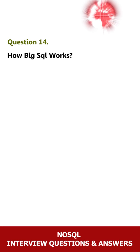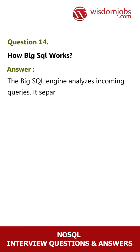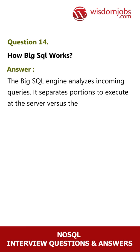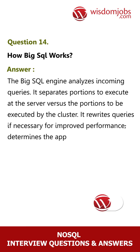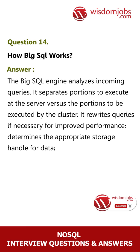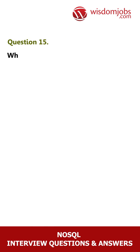Question 14: How does Big SQL work? Answer: The Big SQL engine analyzes incoming queries. It separates portions to execute at the server versus the portions to be executed by the cluster. It rewrites queries if necessary for improved performance, determines the appropriate storage handler for data, produces the execution plan, and executes and coordinates the query.